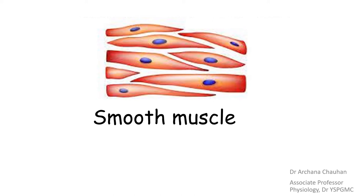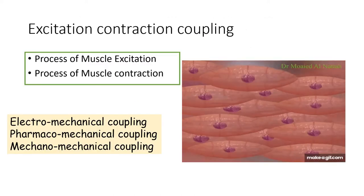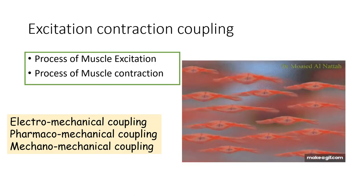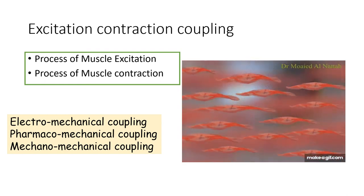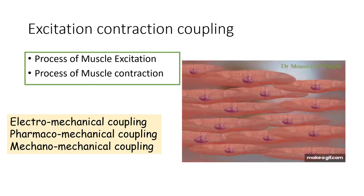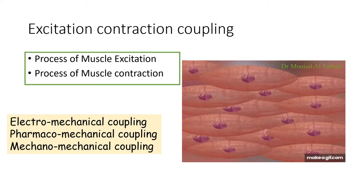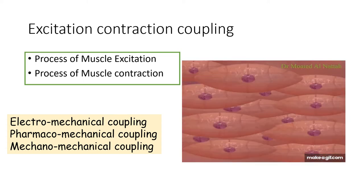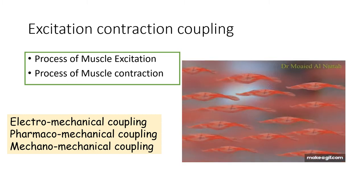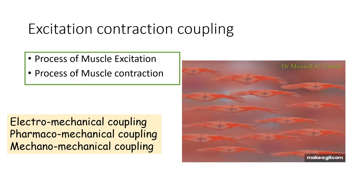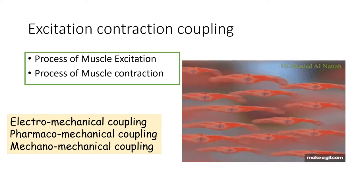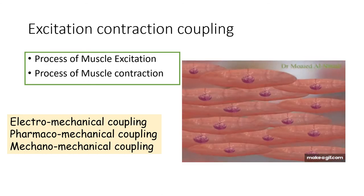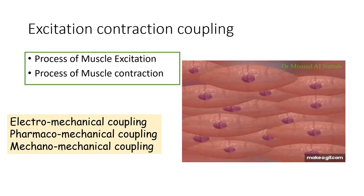Physiology of smooth muscle. The excitation-contraction coupling in smooth muscle is a process by which muscle excitation is linked to muscle contraction. This may be electromechanical in nature when the smooth muscle is excited by depolarization of the sarcolemmal membrane, pharmacomechanical in which the smooth muscle is excited by some chemical agent or drug, or mechanico-mechanical in which a muscle is excited by stretch.